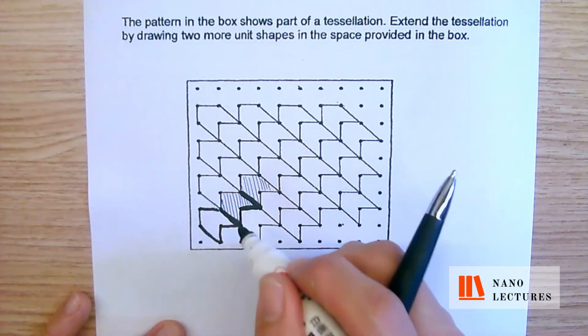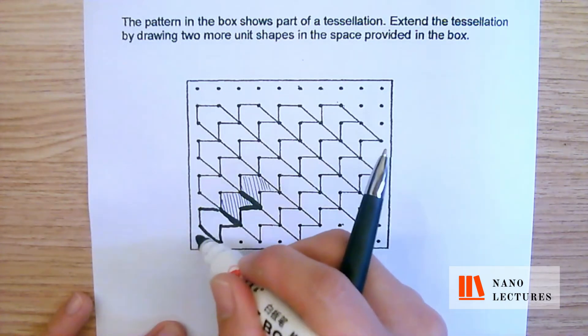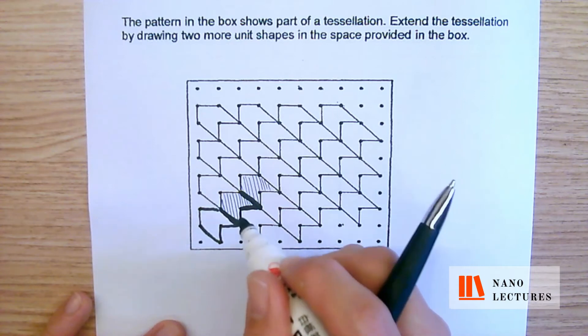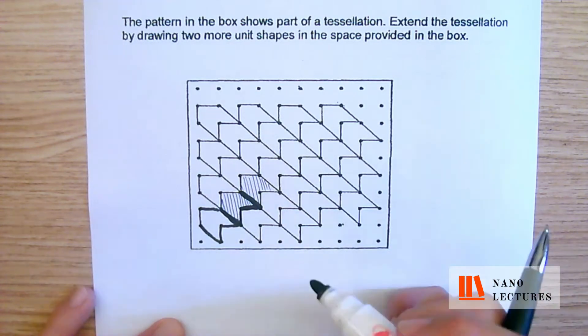So the strategy that I always teach is always go line by line. Don't try to replicate the entire thing. You'll be too confused. Every single problem, break it down into different pieces, you'll be able to get an answer.